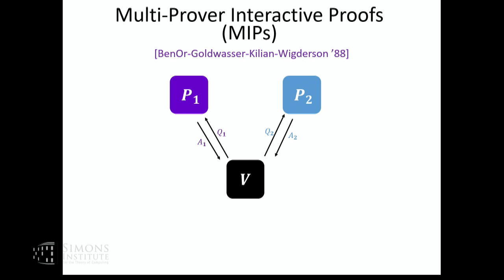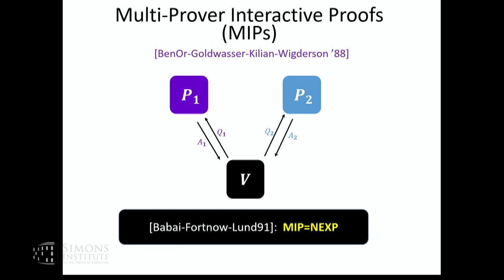In this model there are two provers that are not allowed to interact. It was inspired by the goal of achieving zero-knowledge. What was really surprising, shown a few years later by Faulkner and Lund, is that this is a very, very powerful proof system. Namely, you can prove any language in NEXP, assuming you have two provers that do not interact.